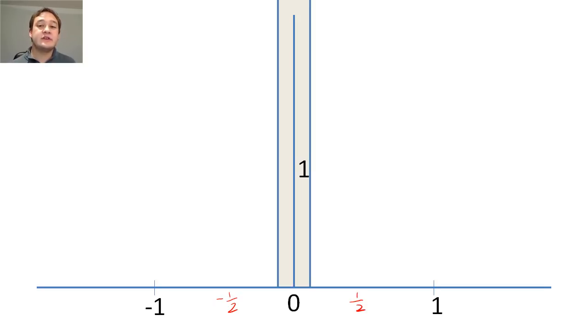A Dirac delta function is essentially such a rectangle, with nearly 0 width and infinite height. We represent the delta function simply as an arrow labeled by its area.